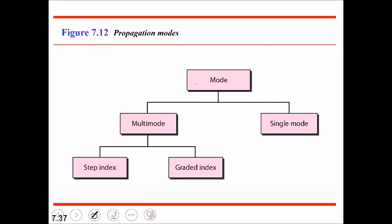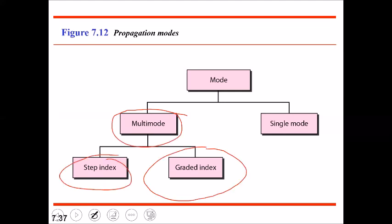There are two modes of propagation in fiber optic cables: multi-mode and single mode. Each requires the fiber to have different physical characteristics. Multi-mode can be implemented in two different ways — step index and graded index — and then you have single mode of propagation.